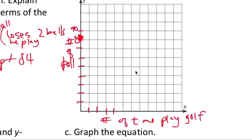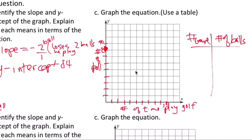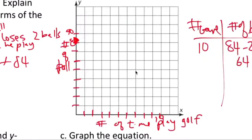1, 2, 3, 4, 5, 6, 7, 8, 9, 10 games. 10 games he's going to lose 20 balls. So number of games and number of balls. Okay. 10 games he's going to have 84 minus 2 times, he loses two balls each time, so you get 64. So 10, 64. So 10, 64 is right there somewhere.